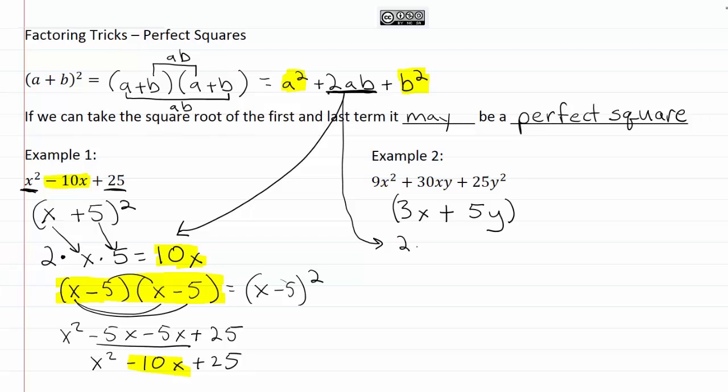So 2 times a is 3x times b is 5y and that is giving us 30xy. It exactly matches our middle term up here.